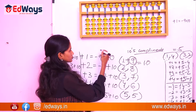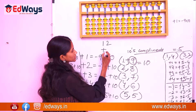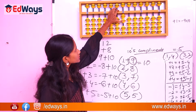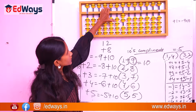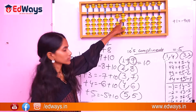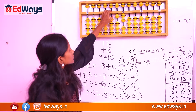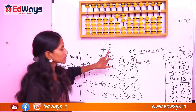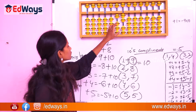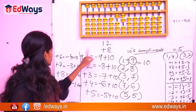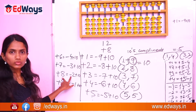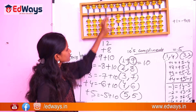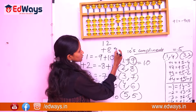Let me show this with an example: 12 plus 8. How do you represent 12? Place 2 in the ones rod and 1 in the tens rod — this equals 10. Now we need to add 8. Are there 7 beads available? No, because we only have up to 5, 6, and 7. We are asked to add 8. What is 8's complement? It is 2. So we subtract the complement and add 10 — the answer is 20.